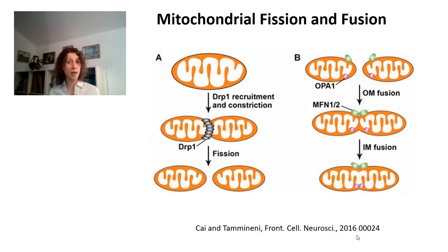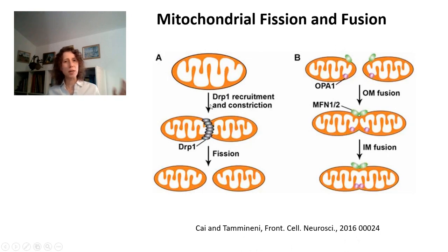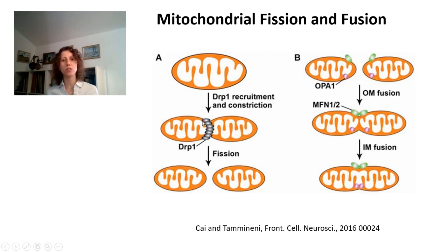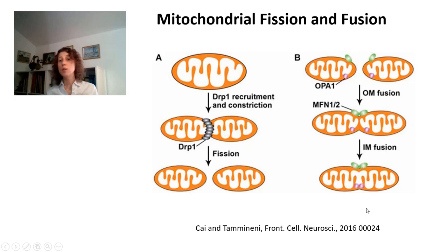Mitochondrial dynamics depends on mitochondrial fission and mitochondrial fusion. Mitochondrial fission is the division of one mitochondrion into two mitochondria, mediated by a series of proteins including DRP1. And mitochondrial fusion is the fusion of two mitochondria into one mitochondrion, mediated by many proteins including mitofusin proteins such as mitofusin 1 and mitofusin 2.